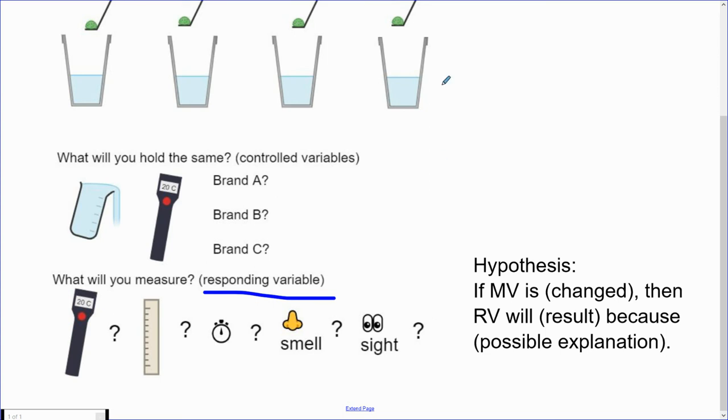If we're to do our experimental design properly, we can come up with a proper hypothesis statement. A general form of the hypothesis statement is: if the manipulated variable is changed somehow, then the responding variable will also change. How so? Well, that's up to you to explain, to guess, because of some sort of possible explanation.